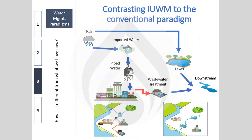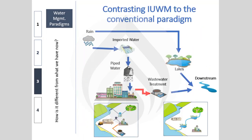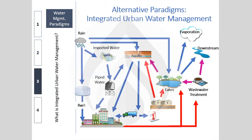In the IUWM paradigm, the pipe supply, stormwater, and wastewater systems are treated as integrated rather than separate. Given that Indian cities' complex, interconnected water reality won't change quickly, we need to view and manage the system as a whole for at least the next 20 years. Singapore's four-tap system is one example of IUWM in practice, and reference materials on this have been posted to Google Classroom.